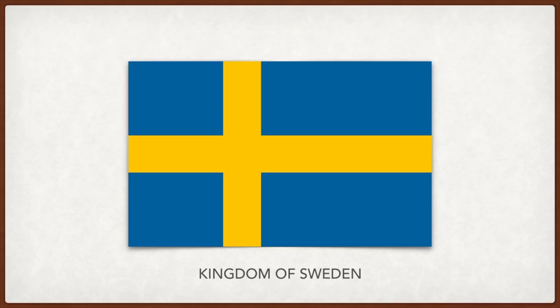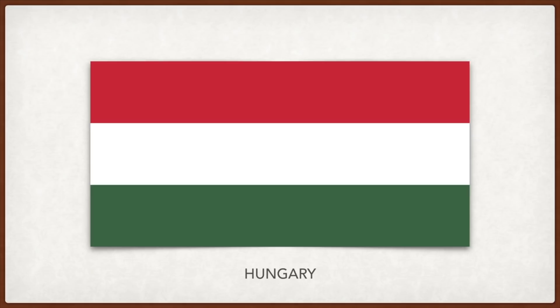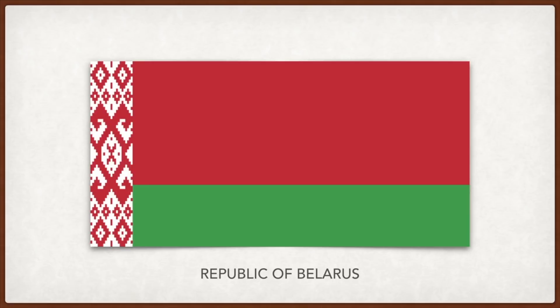Hungary: red represents strength and the blood spilled for the fatherland, white represents faithfulness and freedom, and green represents hope and the pastures of Hungary. Belarus: red represents freedom and sacrifice while green represents life.